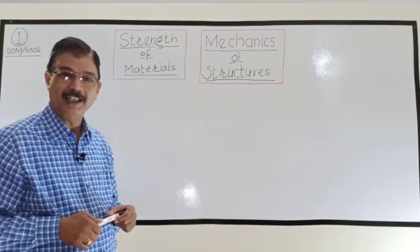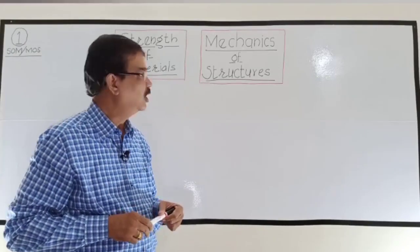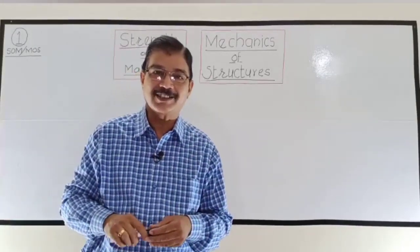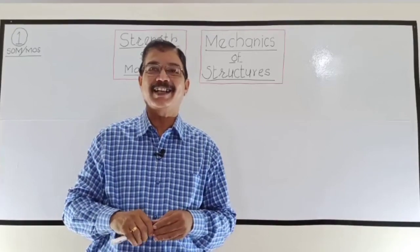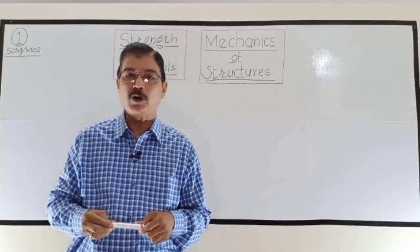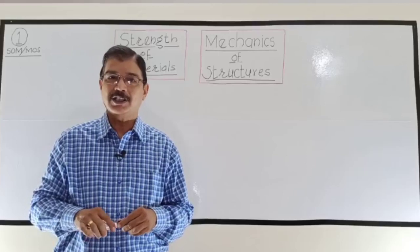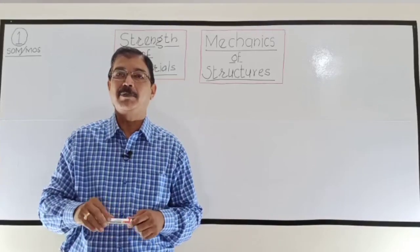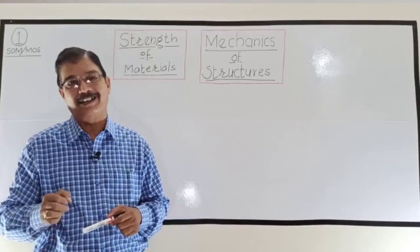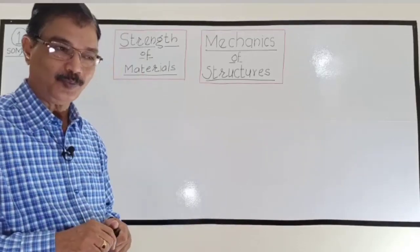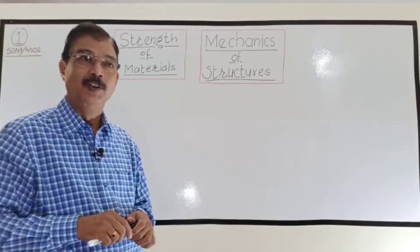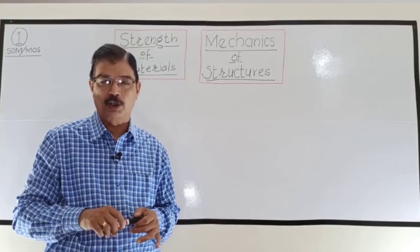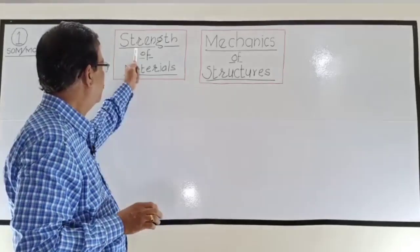Strength of Material is used for Mechanical Engineering students, and Civil Engineering students use the name Mechanics of Structure. Both subjects are the same; only some topics differ. Henceforth, when I say SOM it is also applicable for MOS. SOM means Strength of Material, MOS means Mechanics of Structure.